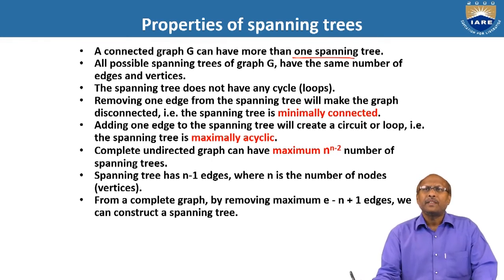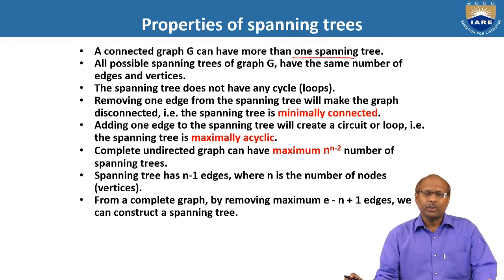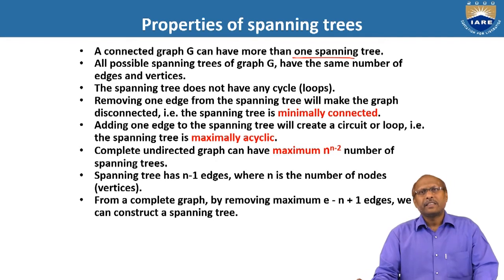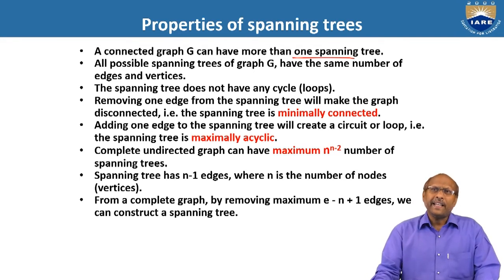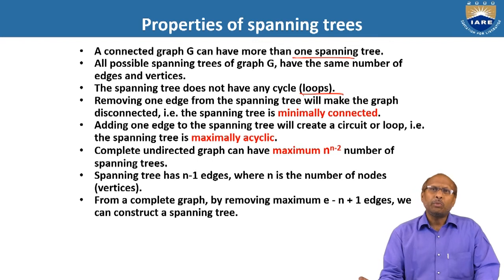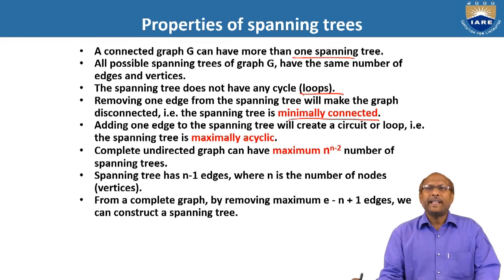All possible spanning trees of graph G have the same number of edges and vertices. All spanning trees will have the same number of edges and the same number of vertices. The number of edges in the graph and the spanning tree may differ. The spanning tree does not have any cycle or loop — if there is a loop, it is a graph, not a spanning tree. Removing one edge from the spanning tree will make the graph disconnected, as the spanning tree is minimally connected.